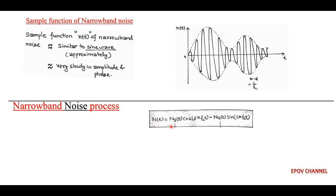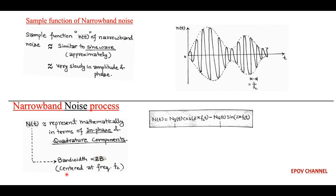This can be represented mathematically in terms of in-phase and quadrature components. The narrowband noise is centered at ±fc with a bandwidth of 2B. Mathematically, the narrowband process N(t) has two components: in-phase component ni and quadrature component nq — both called low pass random processes. So: N(t) = ni·cos(2πfct) − nq·sin(2πfct).